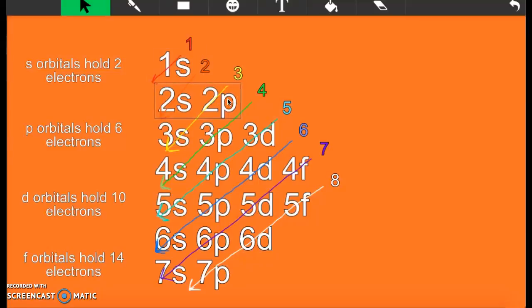After that, once you get beyond neon and you hit sodium, boom, you go to your next energy level. Just follow your diagonal line. As you finish each line, move to the next color. It's that simple. Most of you in class seem to get that.